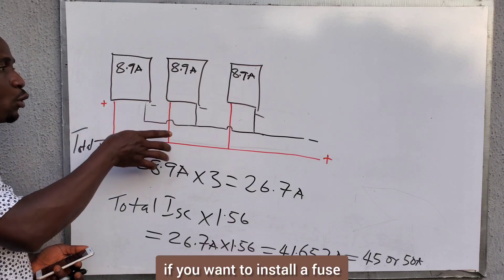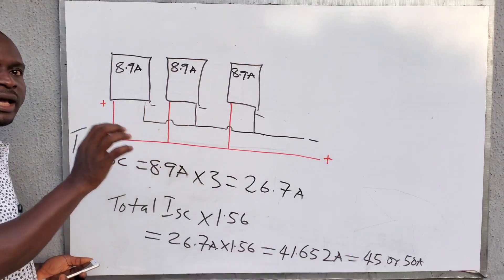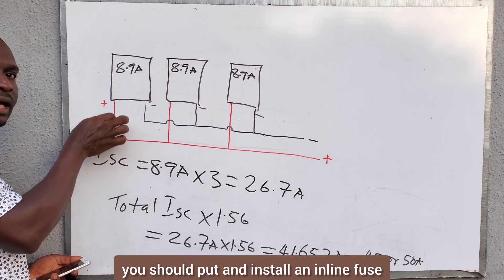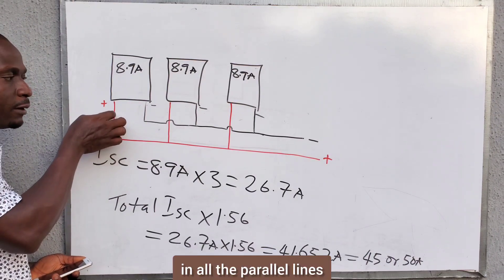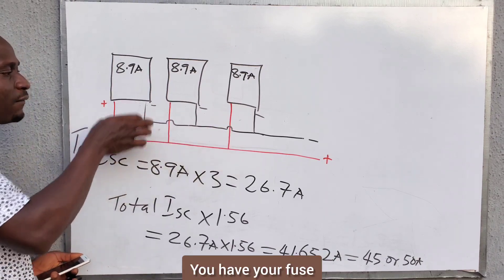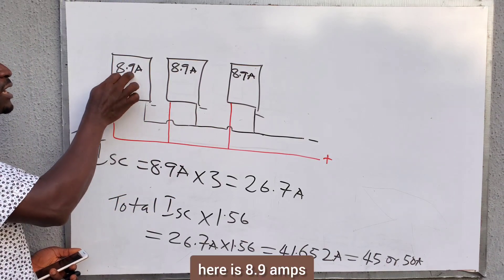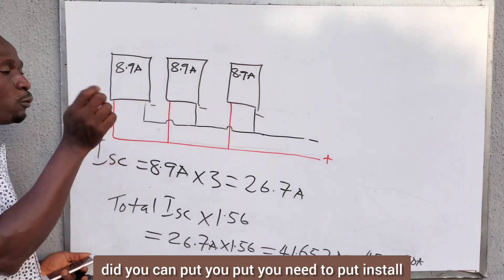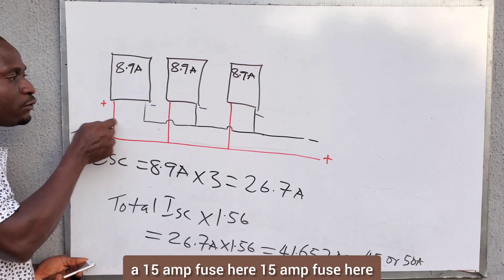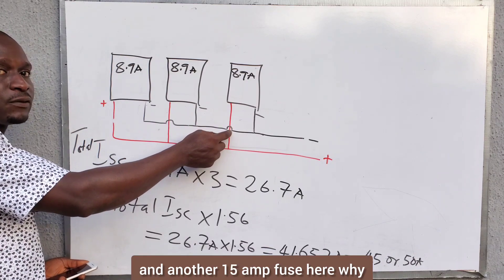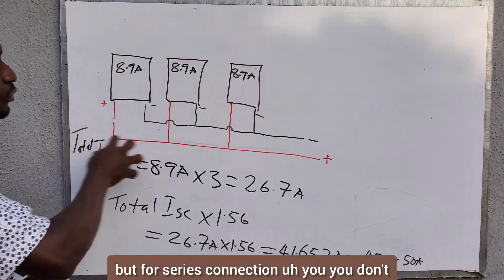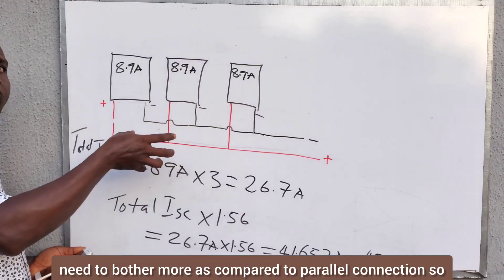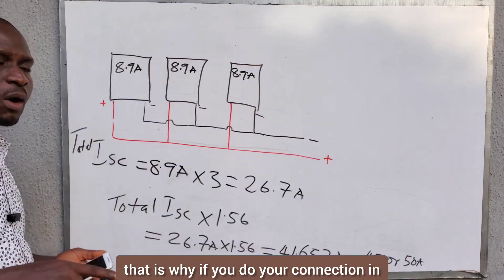Even here, if you want to install a fuse, this is a parallel connection. It is highly recommended that when you have a parallel connection like this, you should install an inline fuse in all the parallel lines. You have your fuse installed here — 8.9 amps per line. From the first calculation we did, you need to install a 15 amp fuse on each parallel line. For series connection, you don't need to worry as much about this compared to parallel connection.